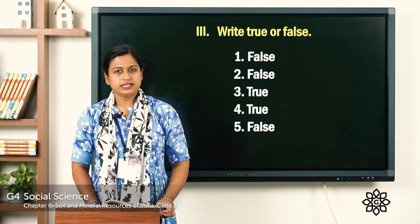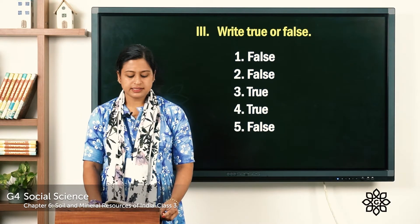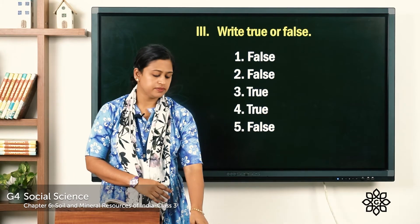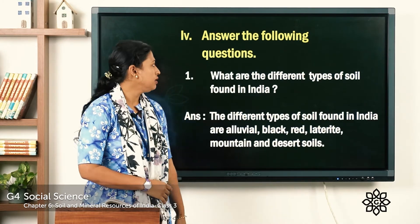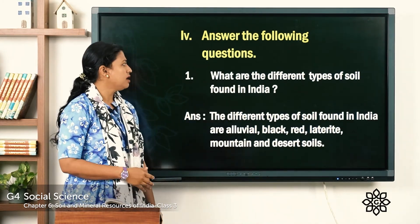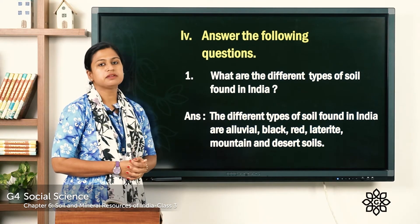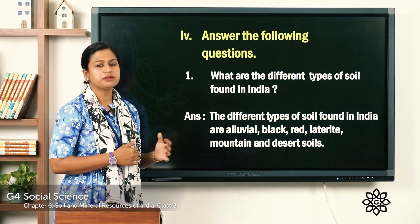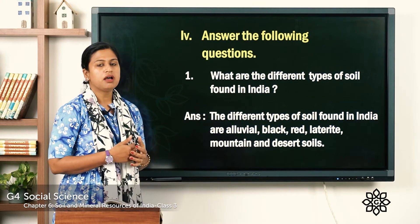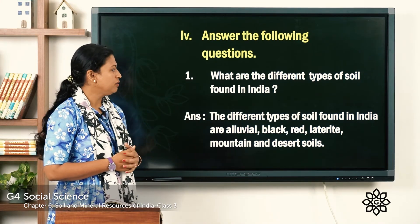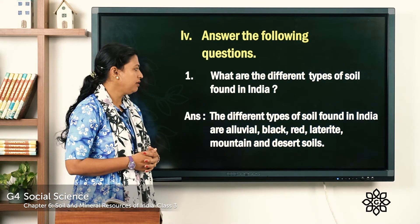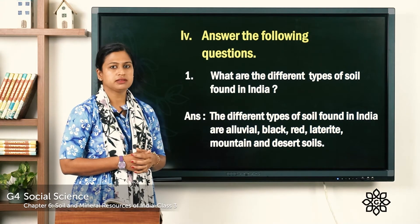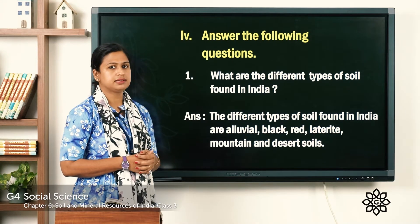Now let's move to the next exercise — answer the following questions. The first question is: what are the different types of soils found in India? The different types of soils found in India are alluvial soil, black soil, red soil, laterite soil, mountain soil and desert soil.